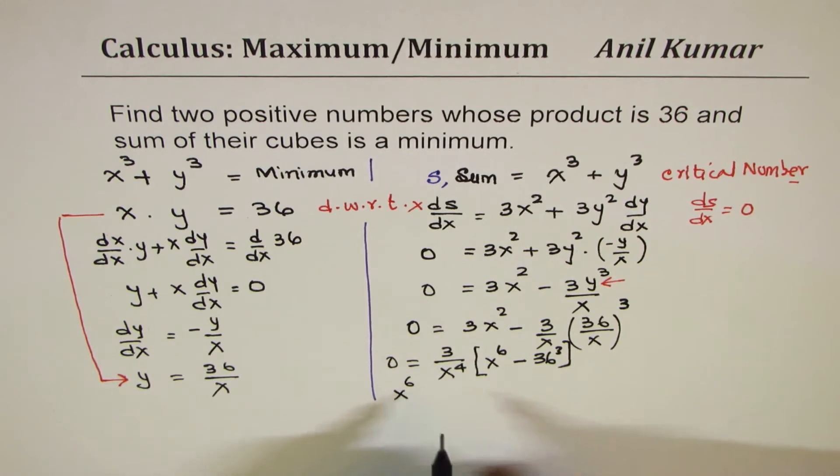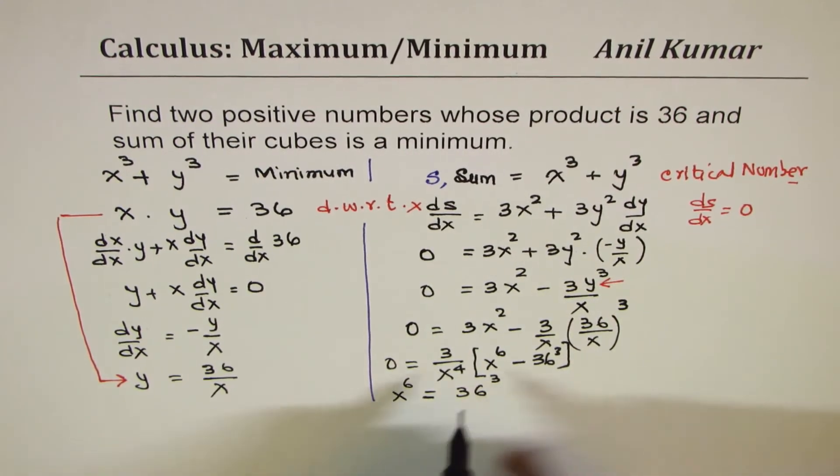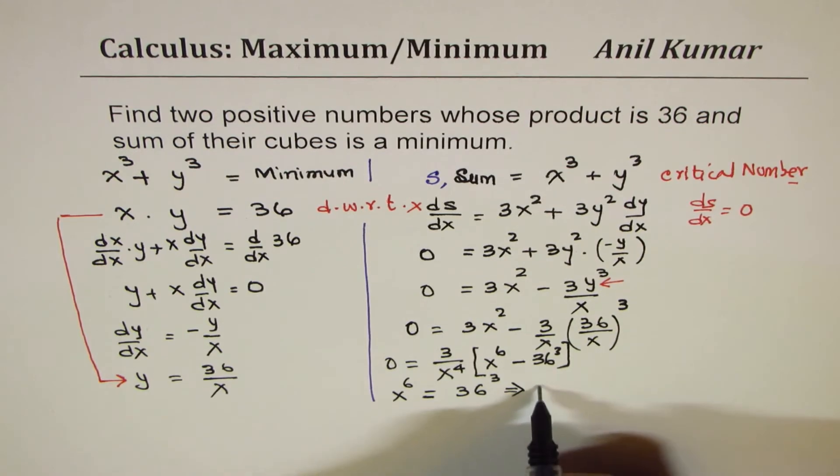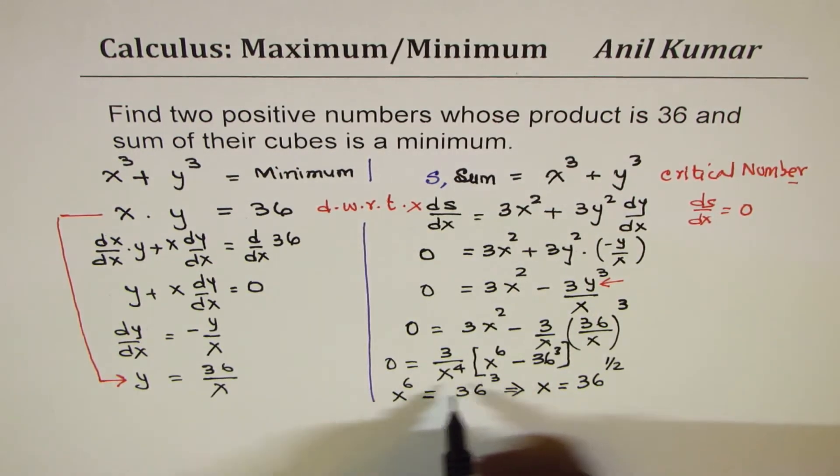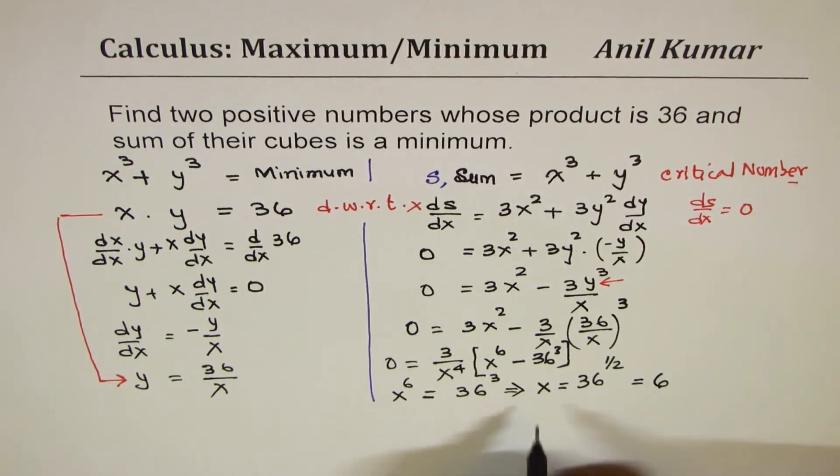Or this implies that x should be equals to 36 to the power of 1/2 - 3 divided by 6 which is 1/2 - and that gives you the answer as 6. So x equals 6.